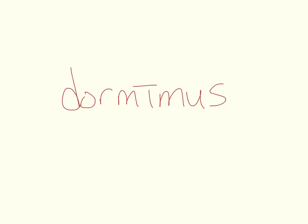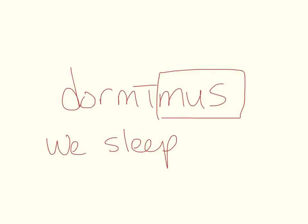Now let's try a few examples where you don't have the chart in front of you — you don't need the chart anymore because you've already memorized it. And if you haven't memorized it, pause the video and memorize it and come back. Let's try dormimus. The very first step is we find that ending: mus. Since we've learned the chart, we know that mus stands for we. So this means we sleep. The understood Latin subject is nos, but it's not required — dormimus and nos dormimus both mean we sleep.